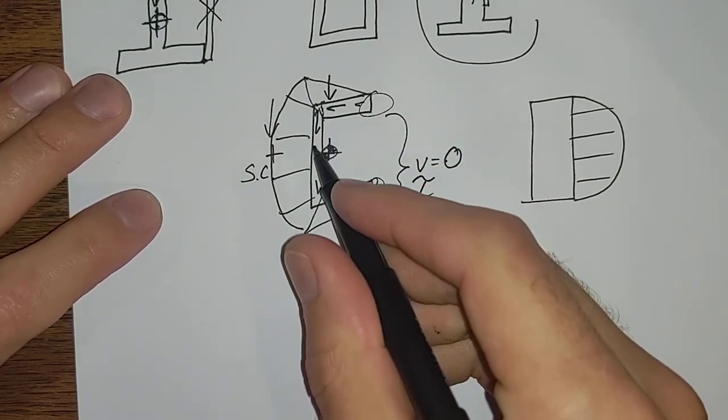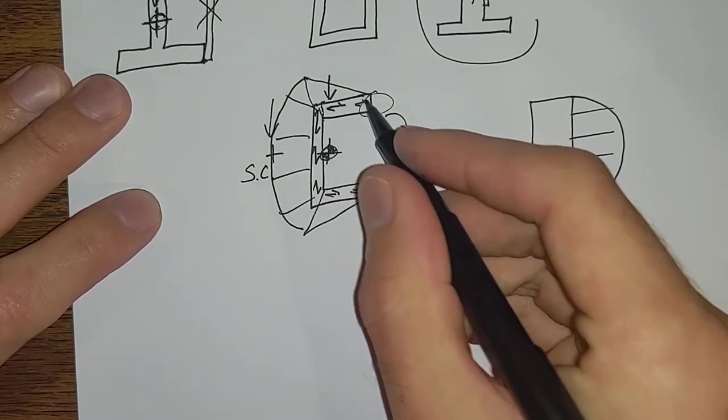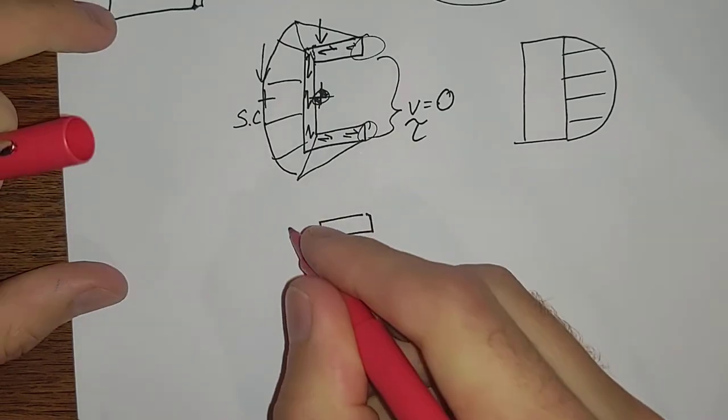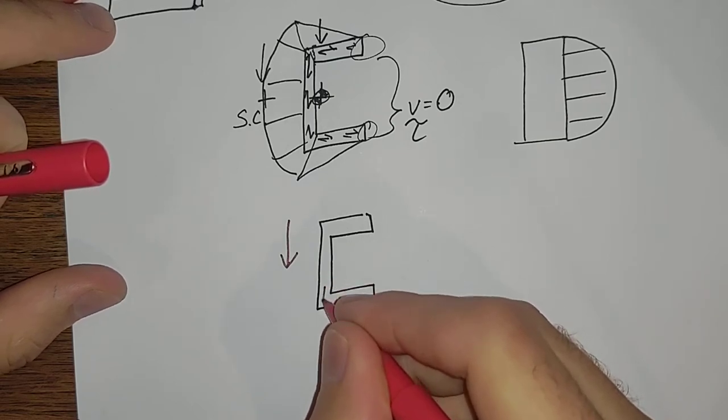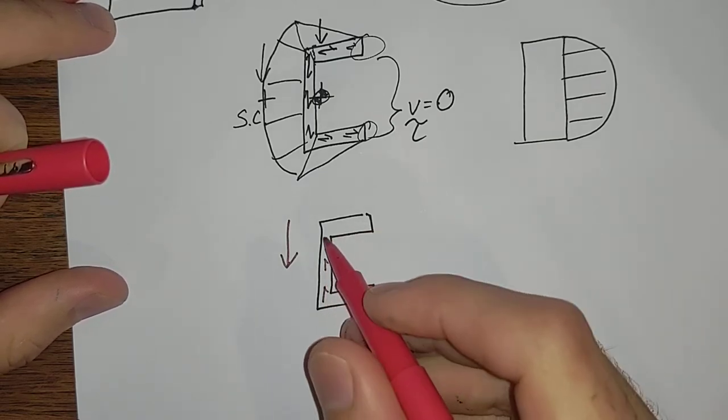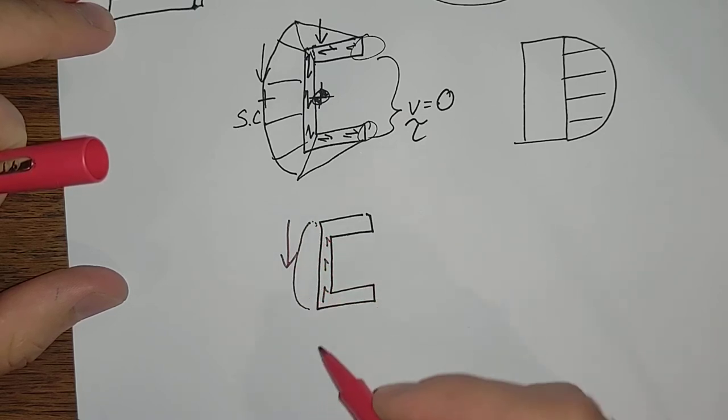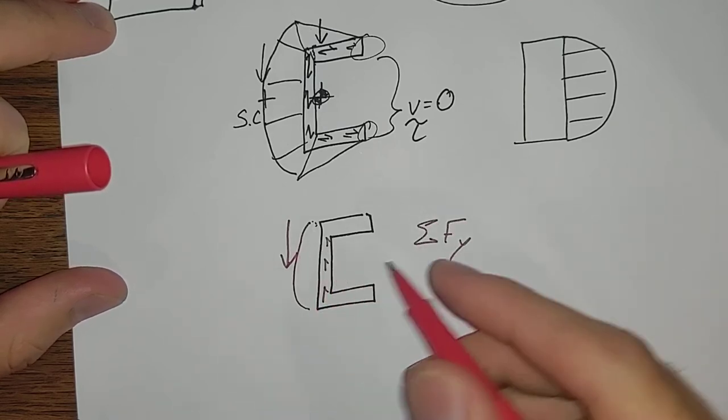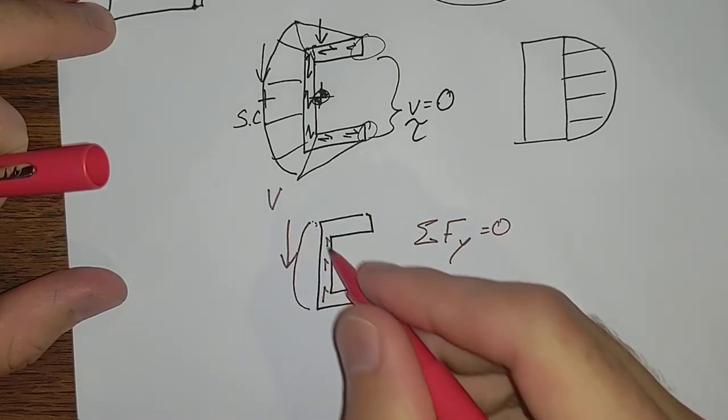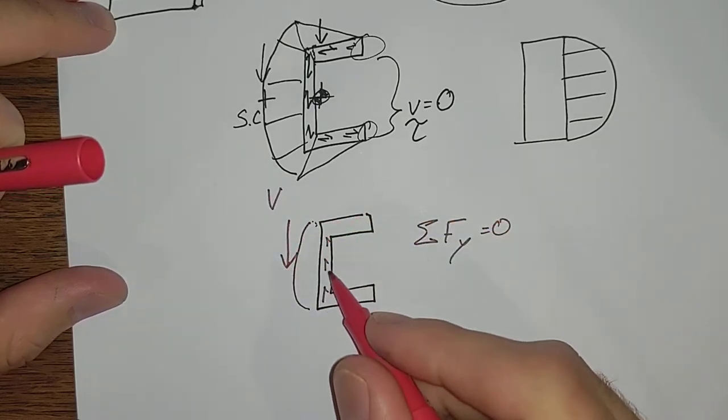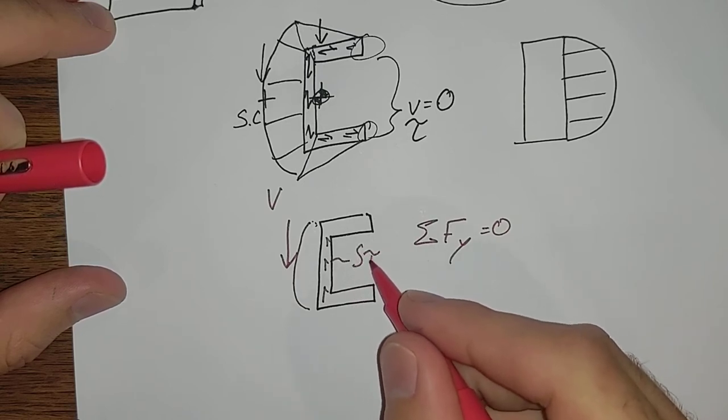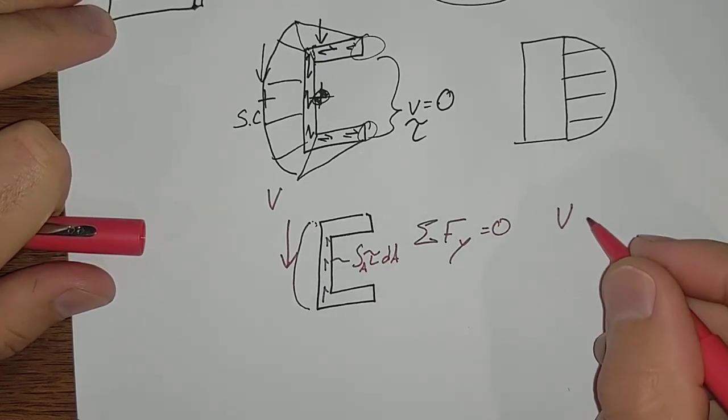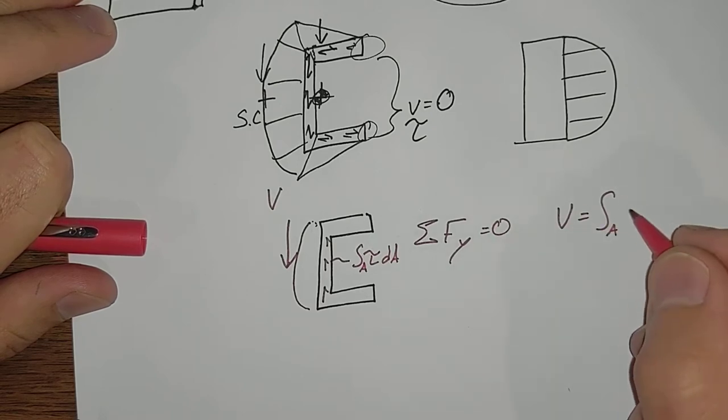So, oh this is backwards. We have a channel. We'll switch colors here. We impose a load that has to be resisted by an internal shear along here. That's a big parabolic distribution. And from sum of our forces in the y-direction equal to zero, we know that this external force V and the integral over that area of shear, V is equal to the integral over that area of the shear force.